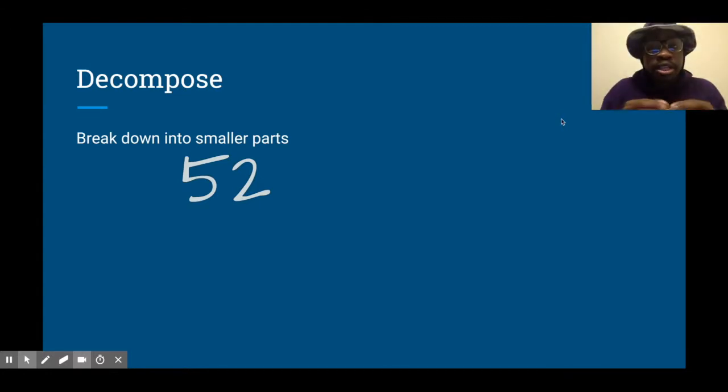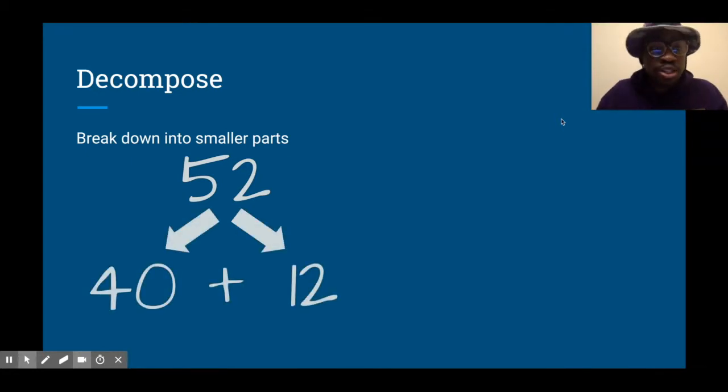I could decompose it into 50 and 2 - smaller numbers but together still make 52. In this example, I'm going to use 40 and 12, together still make 52 but smaller parts. I chose those numbers for a reason you're going to see in just a second.